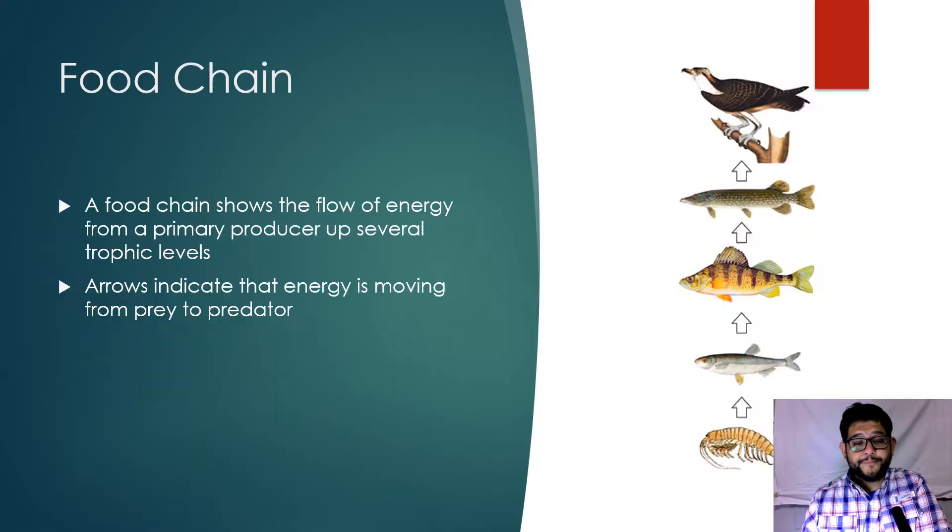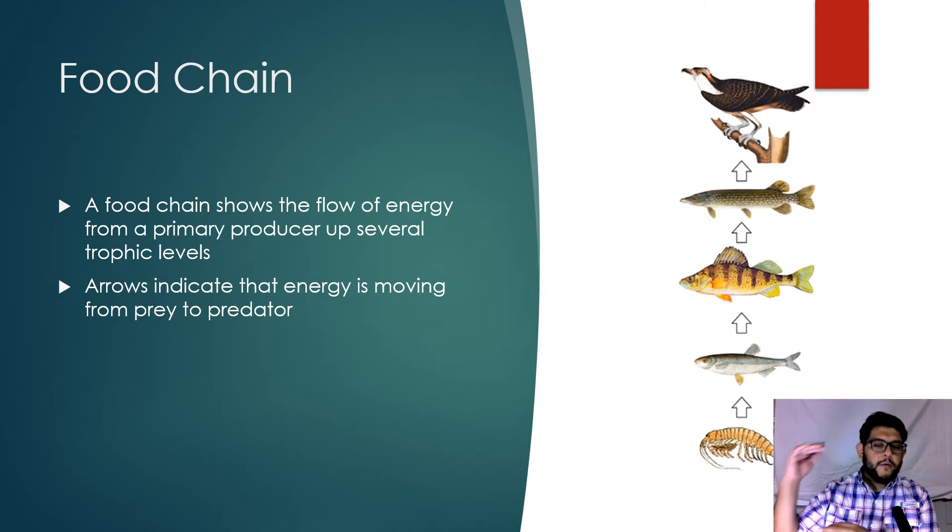One of the things we mentioned in the previous videos about trophic levels was that energy ends up flowing from one level to the next, and as you get higher and higher on the trophic pyramid, less and less energy is available. One of the ways we model this is through a food chain.